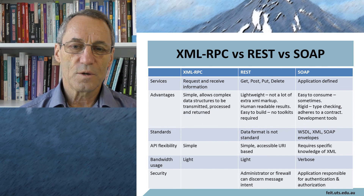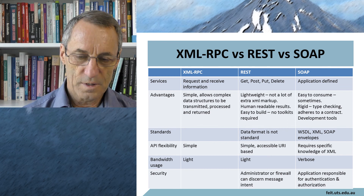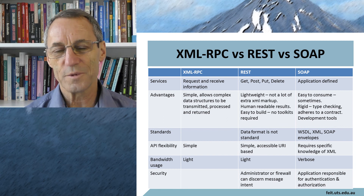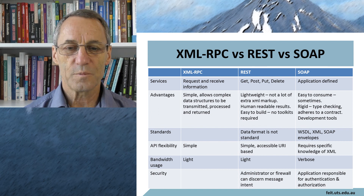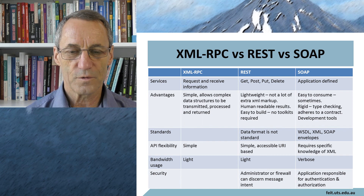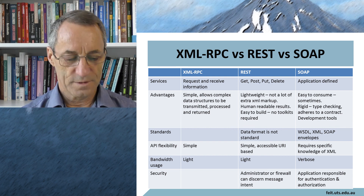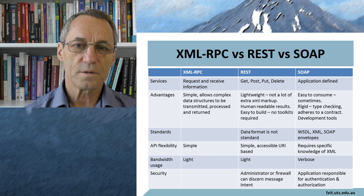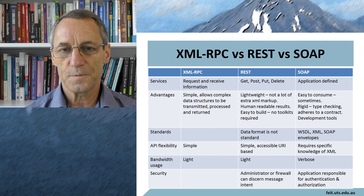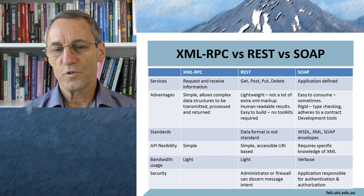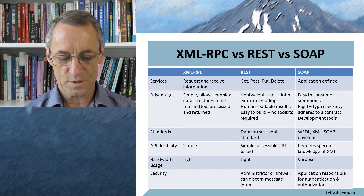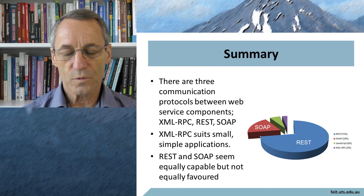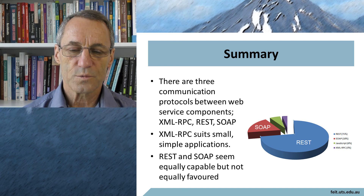As far as standards are concerned, SOAP defines standards for its messages, whereas neither REST nor XML-RPC do. That can be seen as both good and bad — some see freedom as an advantage, others see the lack of fixed definitions as a problem. Regarding bandwidth, both XML-RPC and REST are fairly light, whereas SOAP is fairly heavy. Some comments suggest SOAP messages are very verbose — up to about nine times as big as an equivalent REST message. In summary, there are three methods of communicating between web system components: XML-RPC, REST, and SOAP.